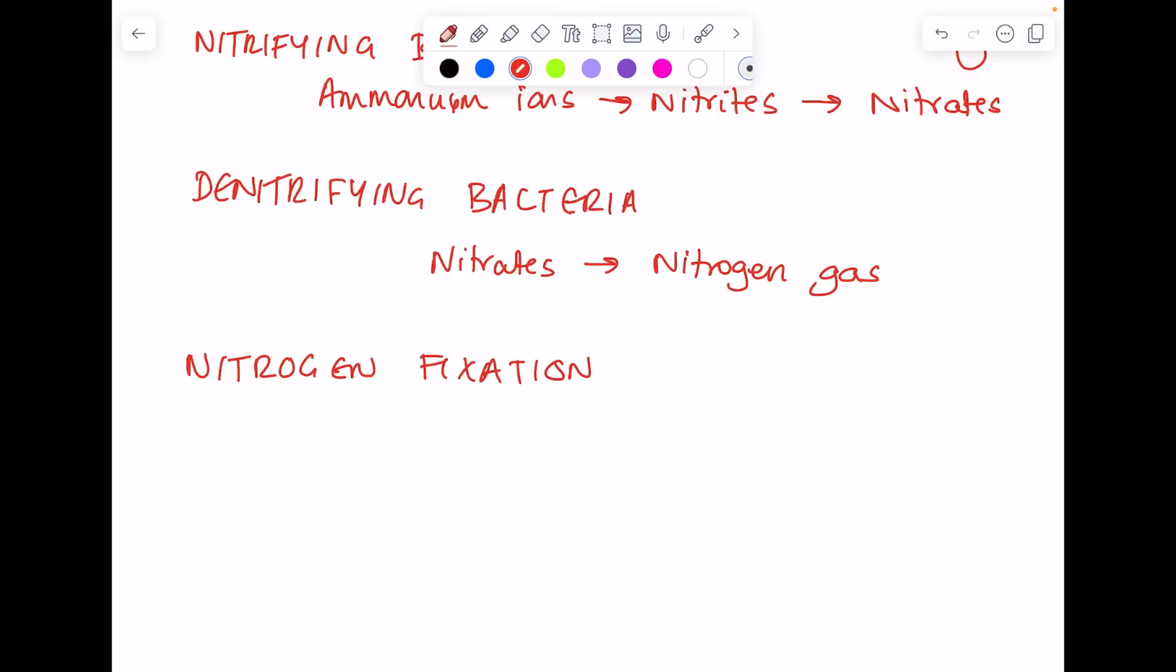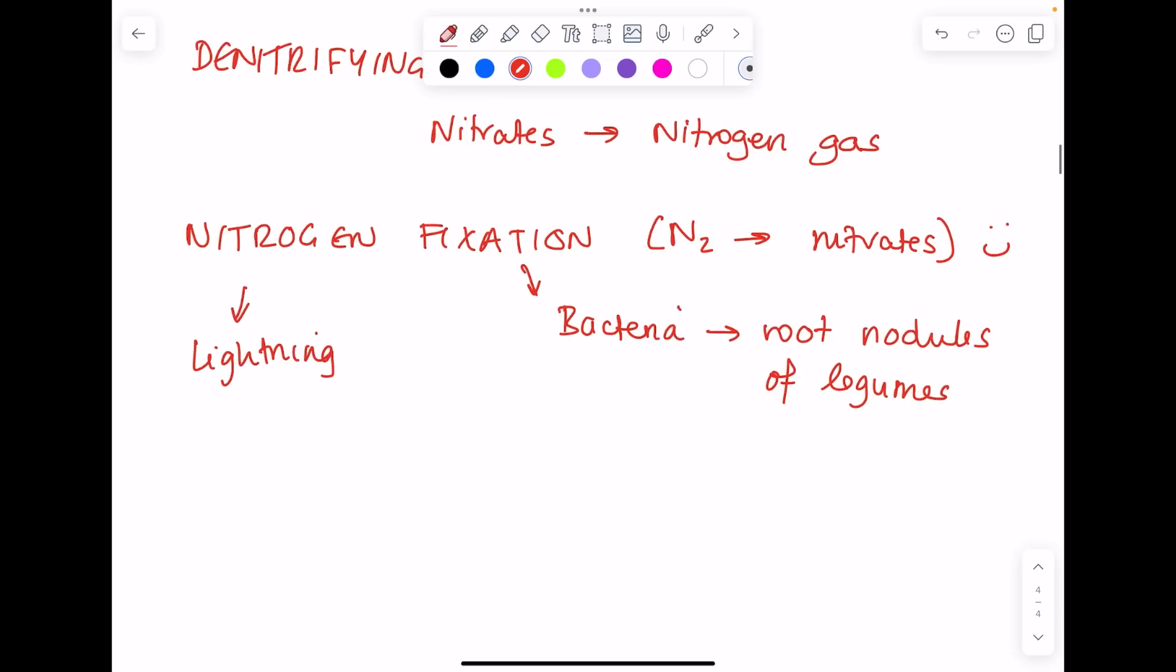Lastly, nitrogen fixation can occur by lightning when lightning strikes the ground, as well as nitrogen fixing bacteria, which are found on root nodules of leguminous plants such as peas and beans. They take nitrogen gas and convert it directly to nitrates, increasing the fertility of the soil.